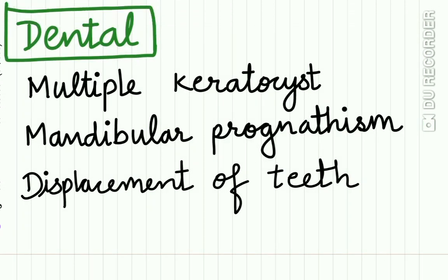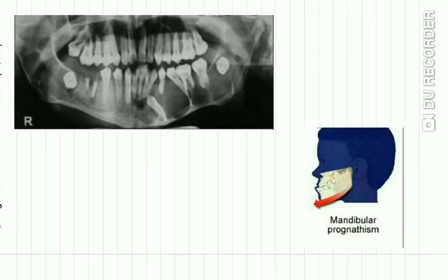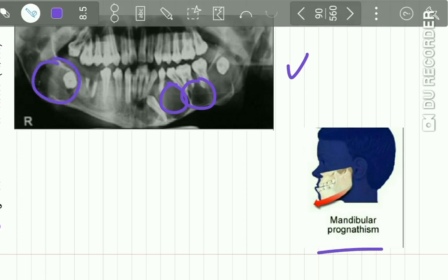The dental anomalies include multiple odontogenic keratocysts (OKCs) present in the jaws, mandibular prognathism, and displacement of teeth. Here you can see an OPG radiograph of a patient with Gorlin-Goltz syndrome showing multiple OKCs and mandibular prognathism.